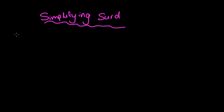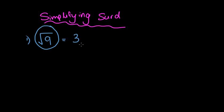So a SIRD is simply a number that has a radical sign, or a square root sign, or a cube root sign above it. Once we've recognised that we have a SIRD, we want to look at how to simplify a SIRD — and that's all we'll be doing in this lesson. The square root of 9 equals 3, so rational numbers like that are nice because we can simplify them very quickly. But the square root of 5 is a SIRD — we can't simplify it any further because it doesn't give a nice rational number.